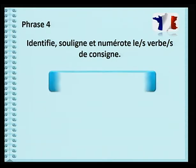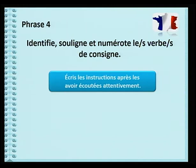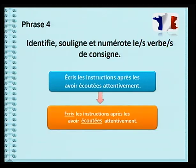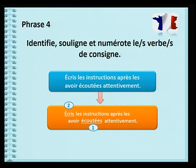Quatrième phrase: «Écris les instructions après les avoir écoutées attentivement.» Quels sont les verbes de consigne? Les verbes de consigne sont «écris» et «écoutées». Attention, où as-tu placé le chiffre 1? Ici, les deux tâches ne sont pas dans le bon ordre. Tu ne pourras pas écrire quelque chose si tu n'as pas écouté avant. Tu devras écouter les instructions avant de pouvoir les écrire. Donc, la première tâche est écouter les instructions attentivement, et la deuxième tâche est écrire les instructions.